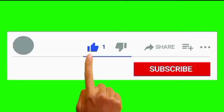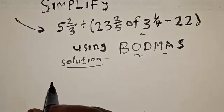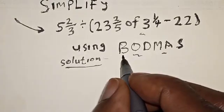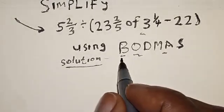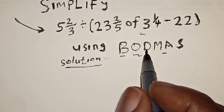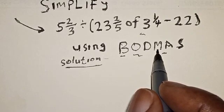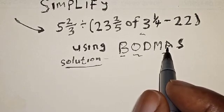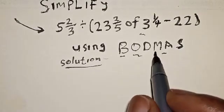We want to use BODMAS to solve this equation. Please don't forget to like, share, comment and subscribe. In BODMAS: B means Bracket, O means Of, D means Division, M means Multiplication, A means Addition, and S means Subtraction. We are going to make use of this to solve this equation.